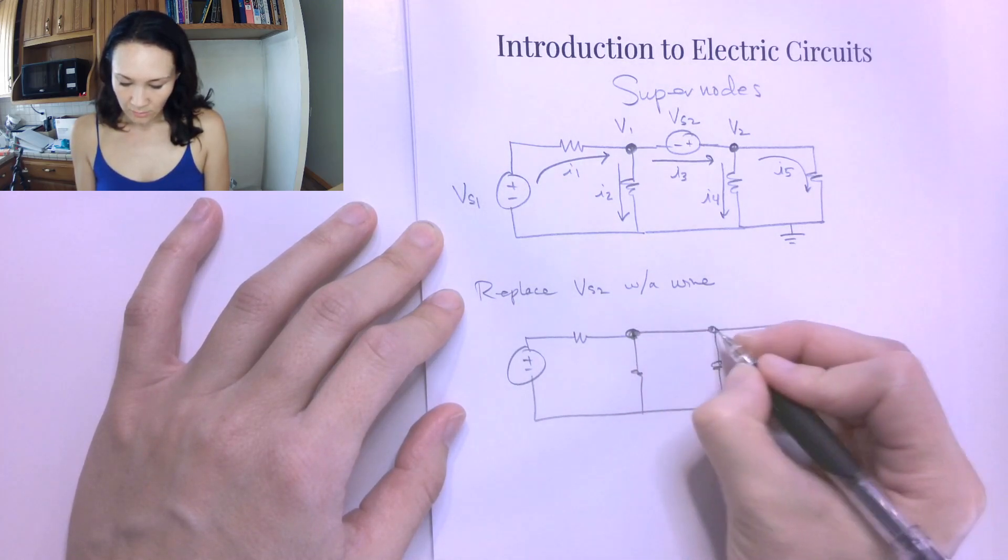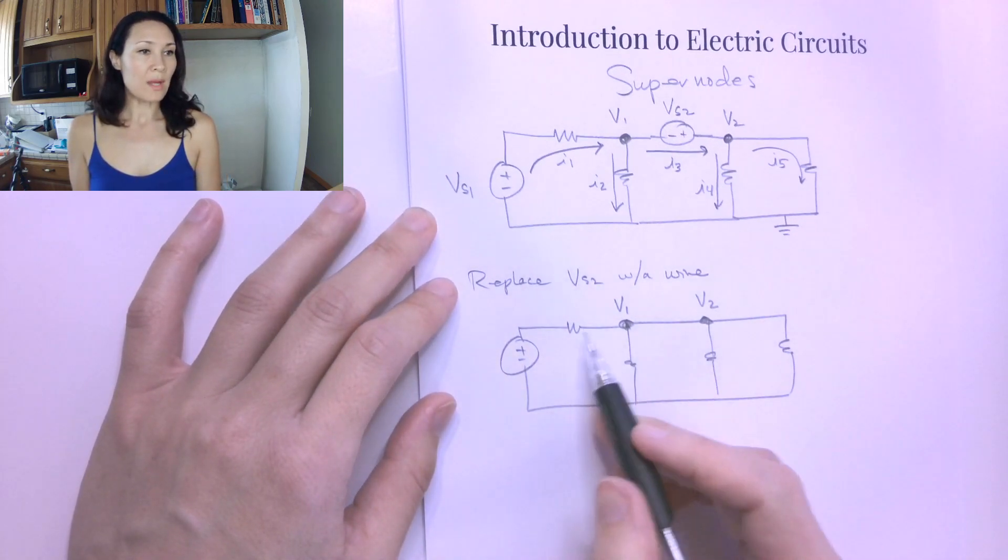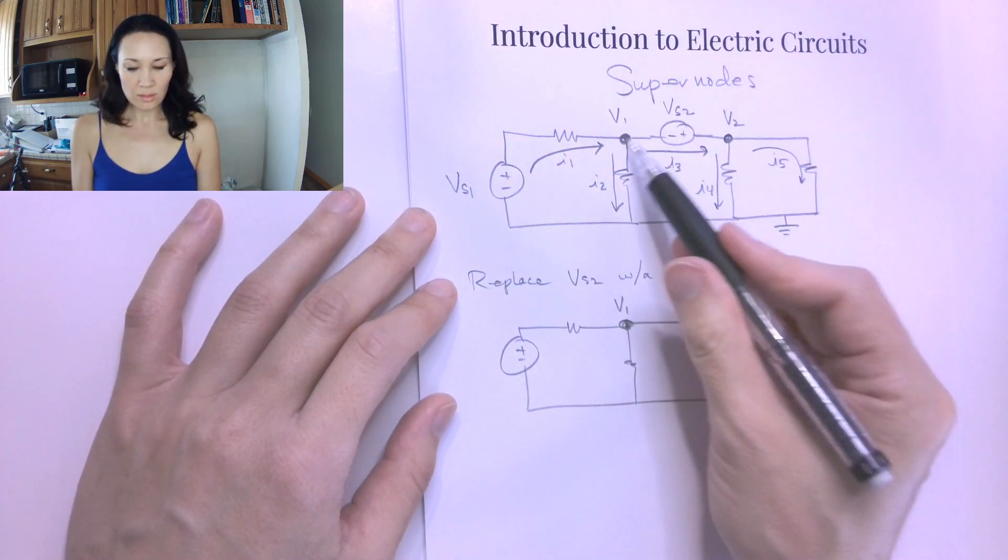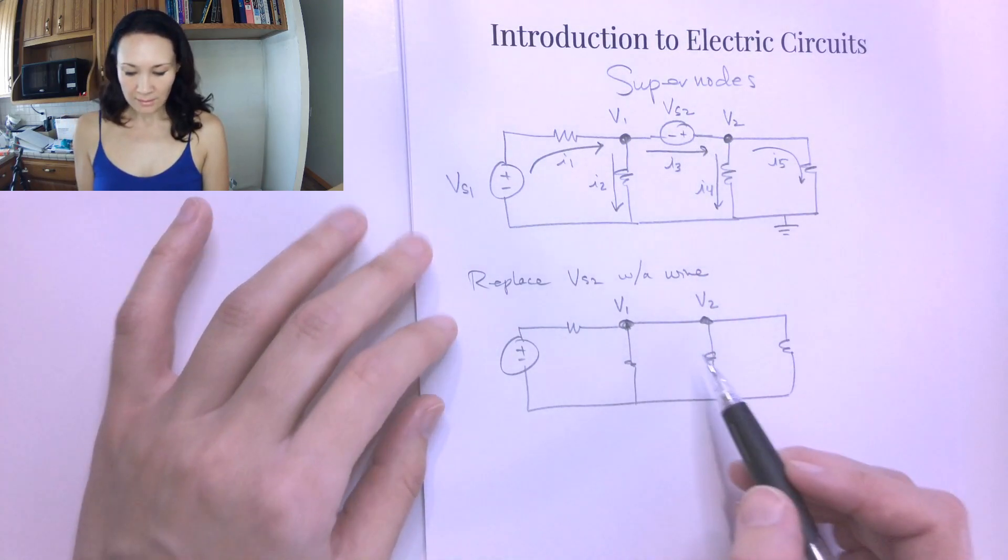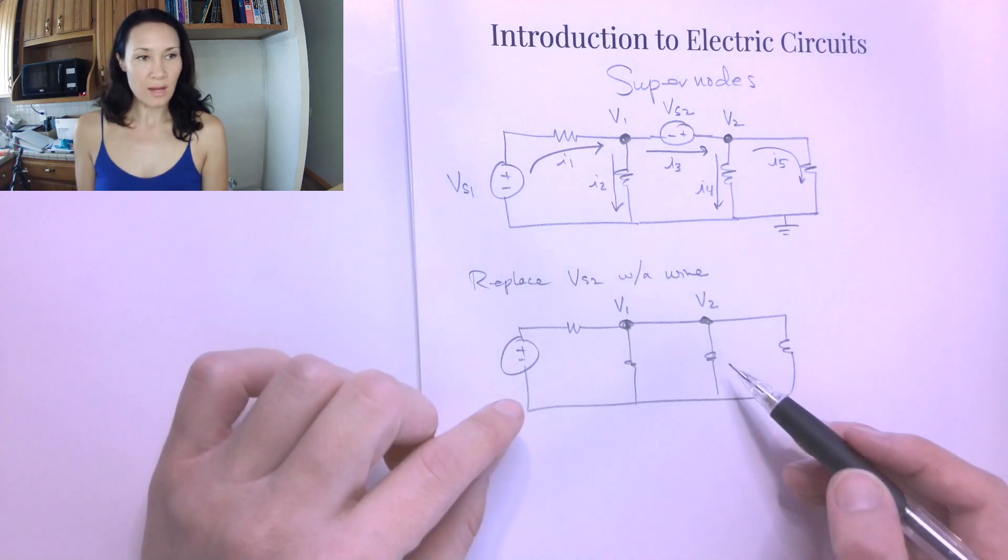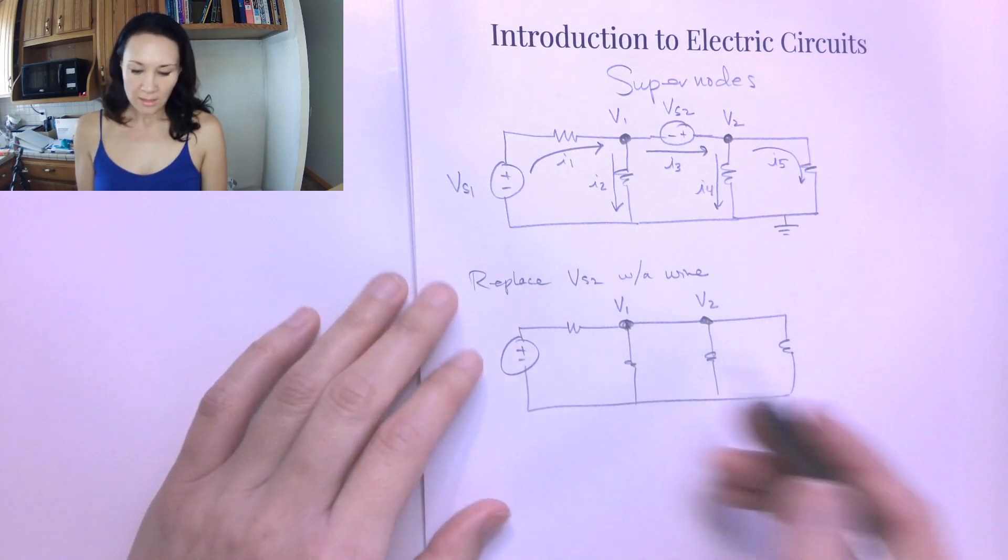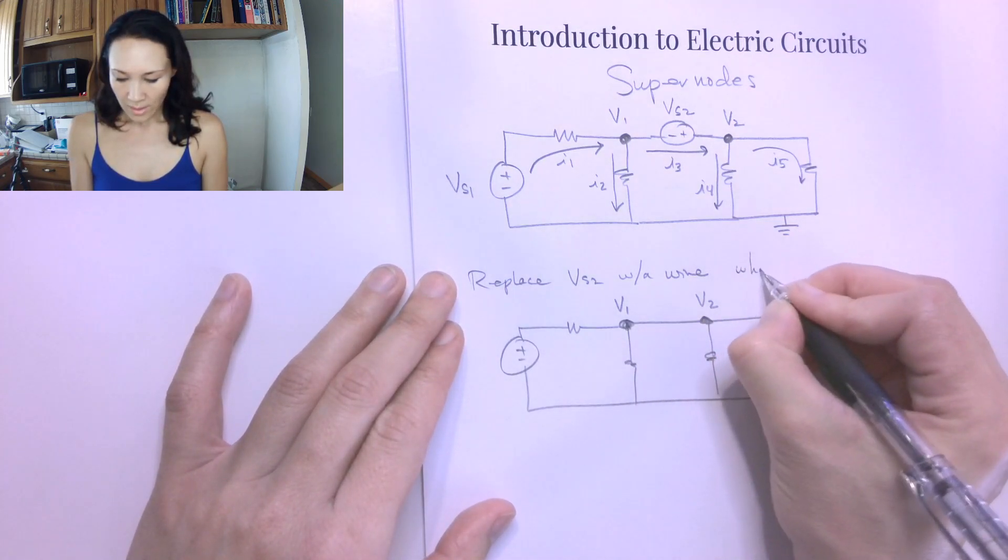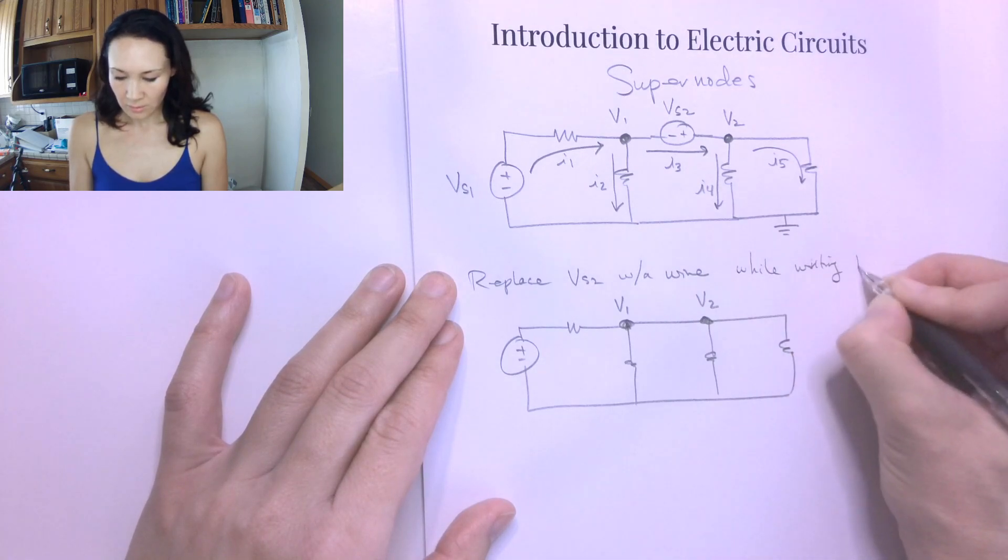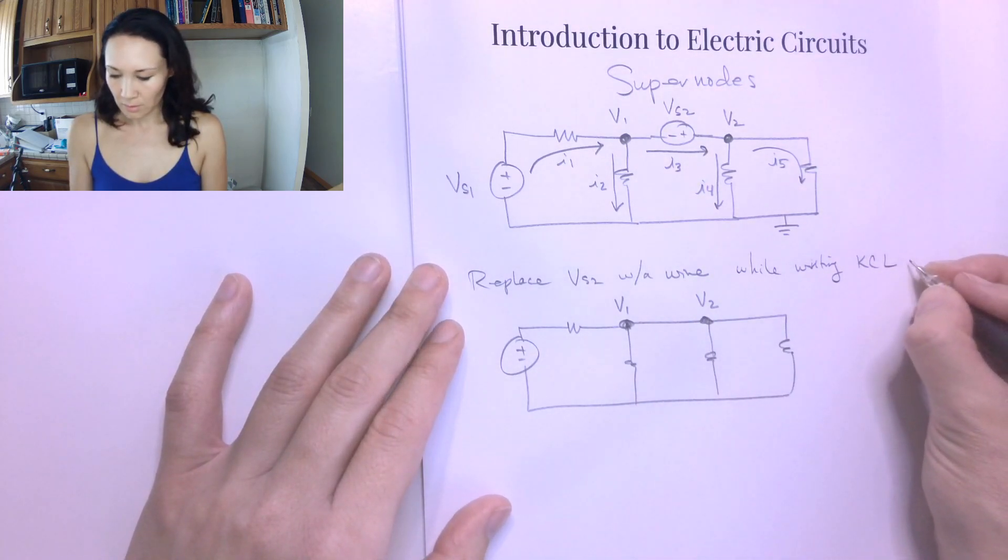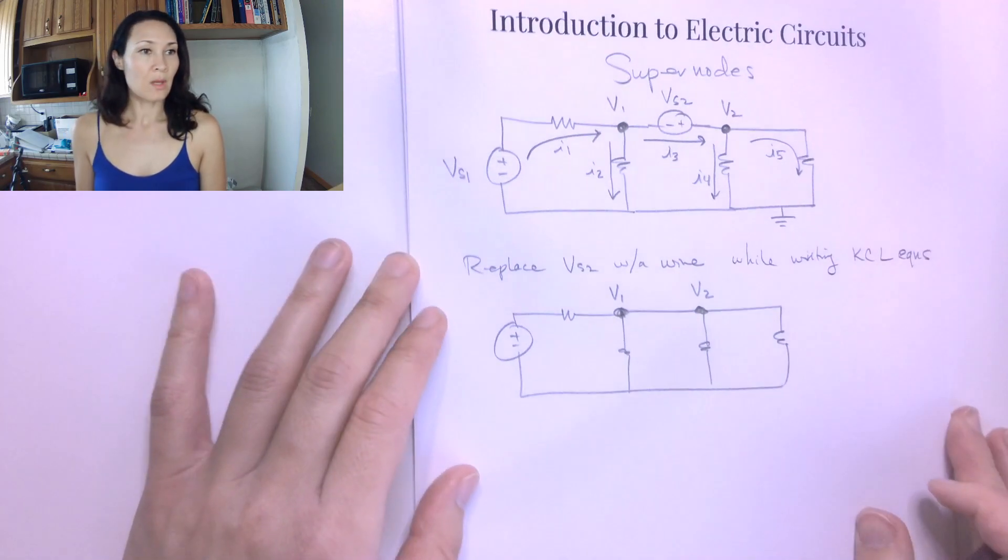So now, I have, I still have my V1 and my V2. I'm not going to change my nodes, because I know these are actually different nodes, because there is a voltage source in between. But what I'm going to do is, I'm just going to kind of pretend that it's not there, while I'm making my KCL equations. So we replaced VS2 with a wire, while writing KCL equations at each node.